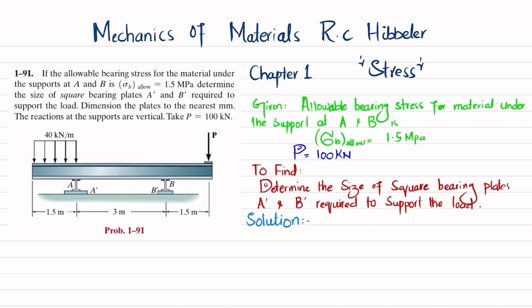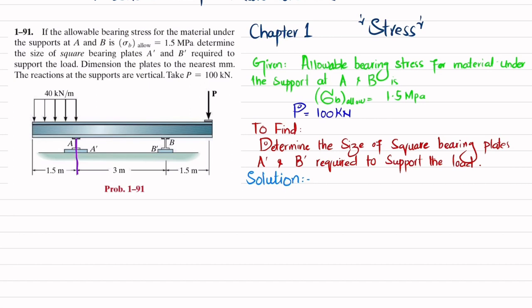We have to find the size of the square bearing plates. We start the solution by removing the support at A to get a vertical reaction force NA, and removing the support at B to get a vertical reaction force NB. We will find NA and NB using equations of equilibrium. The first equation we apply is: sum of all moments about point A equals zero, taking counterclockwise as positive.